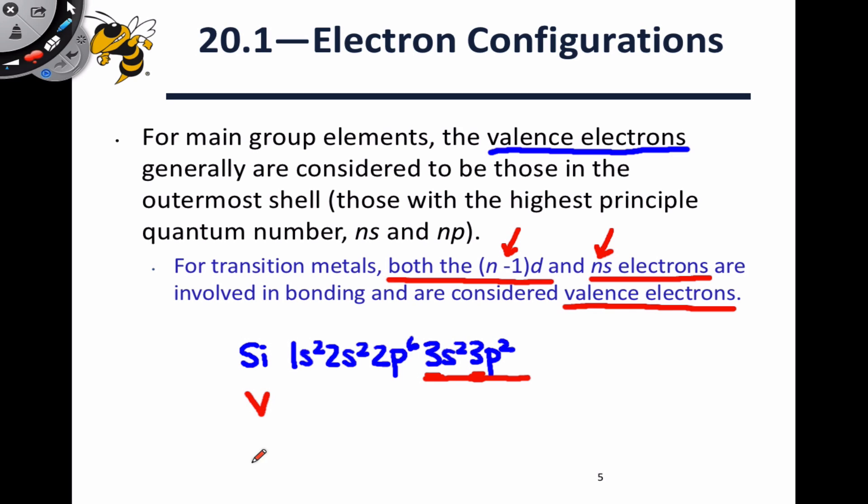For an element like vanadium, for example, which is in group 5 of the periodic table, vanadium has the electron configuration of argon, which is 1s2, 2s2, 2p6, 3s2, 3p6. It has 2 electrons in the 4s subshell and 3 electrons in the 3d subshell, and all 5 of these electrons are considered valence electrons.